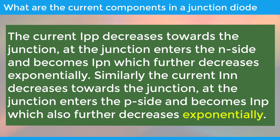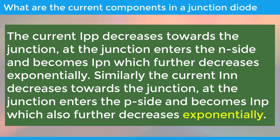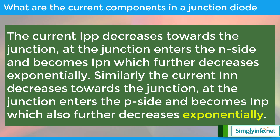The current IPP decreases towards the junction. At the junction it enters the N side and becomes IPN, which further decreases exponentially. Similarly, the current INN decreases towards the junction. At the junction it enters the P side and becomes INP, which also further decreases exponentially.